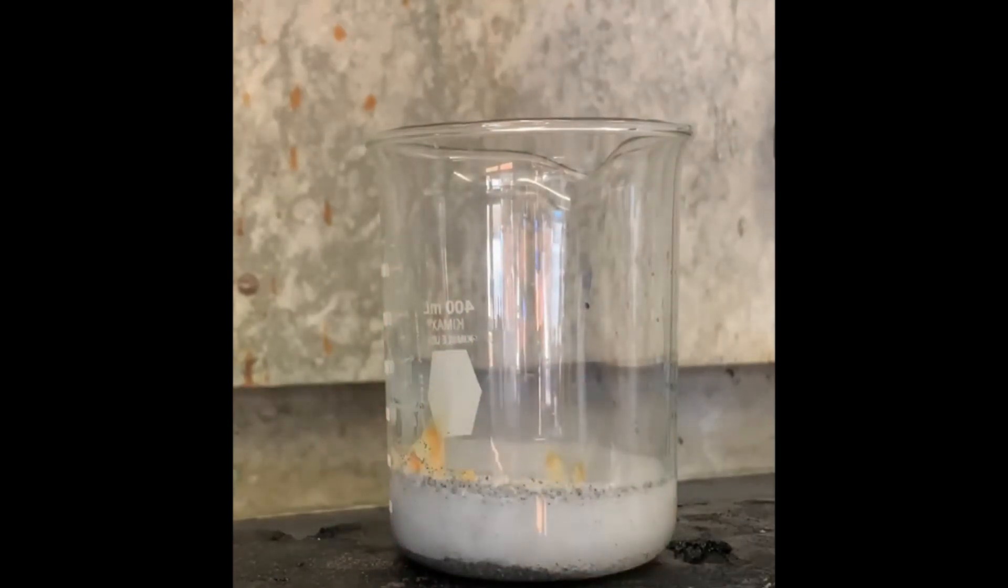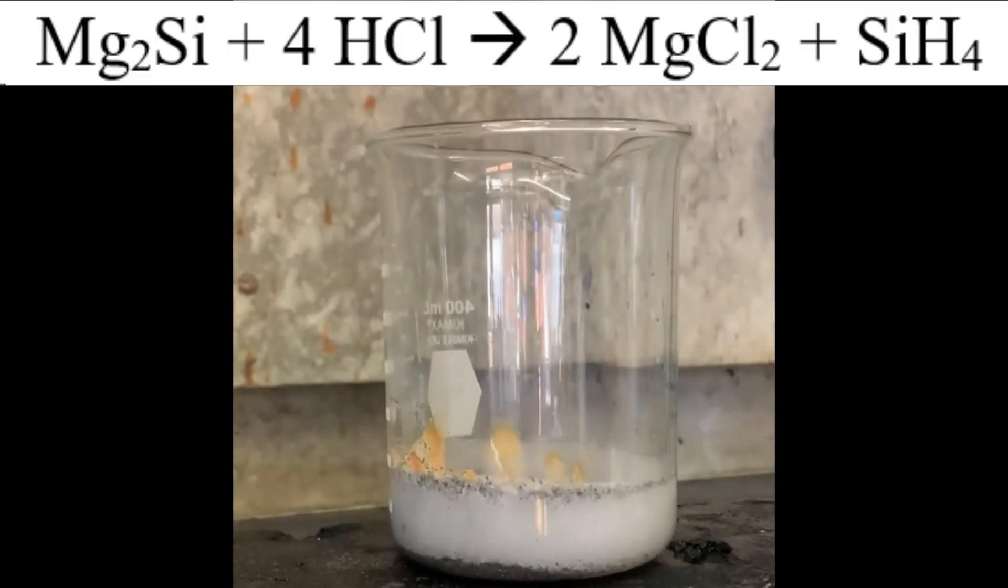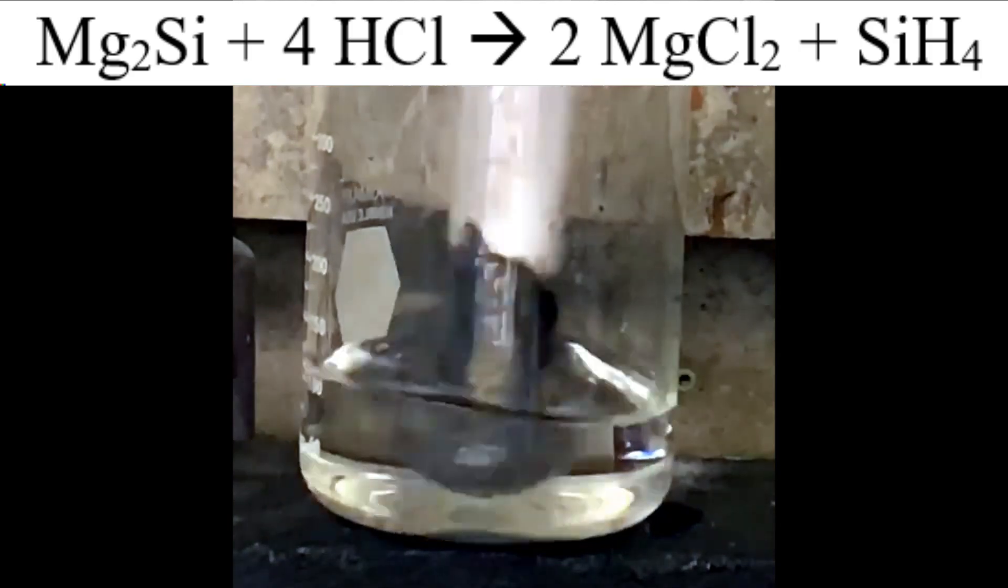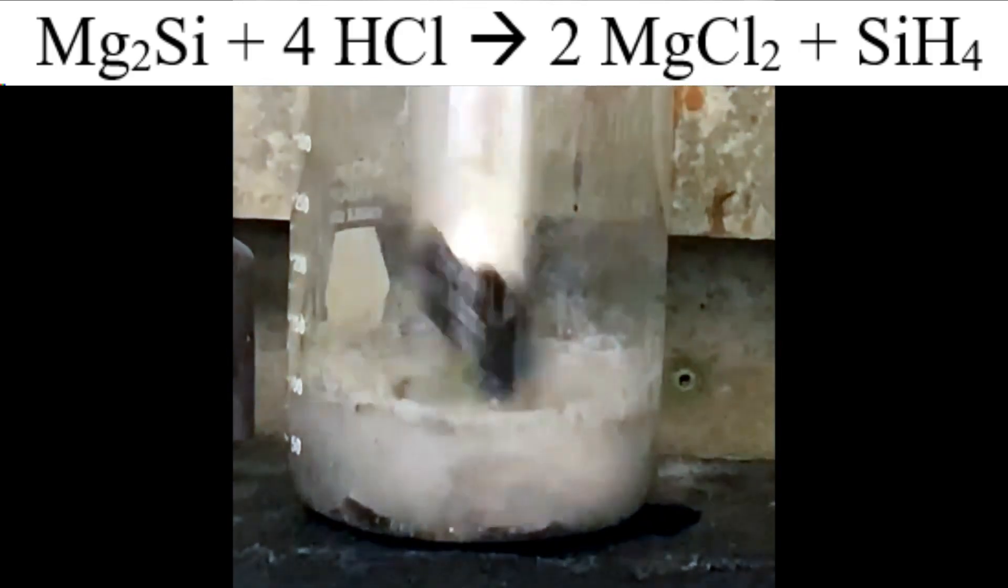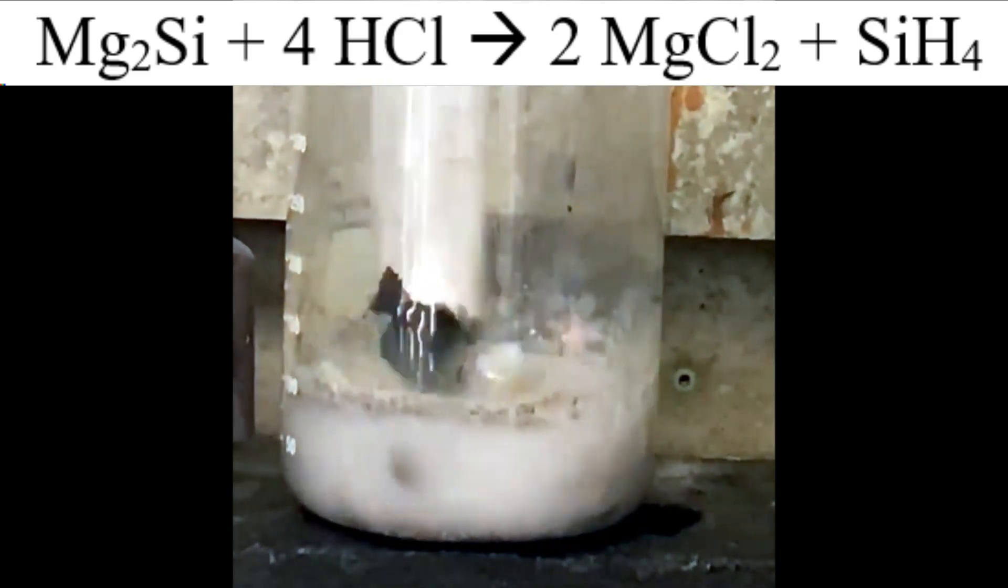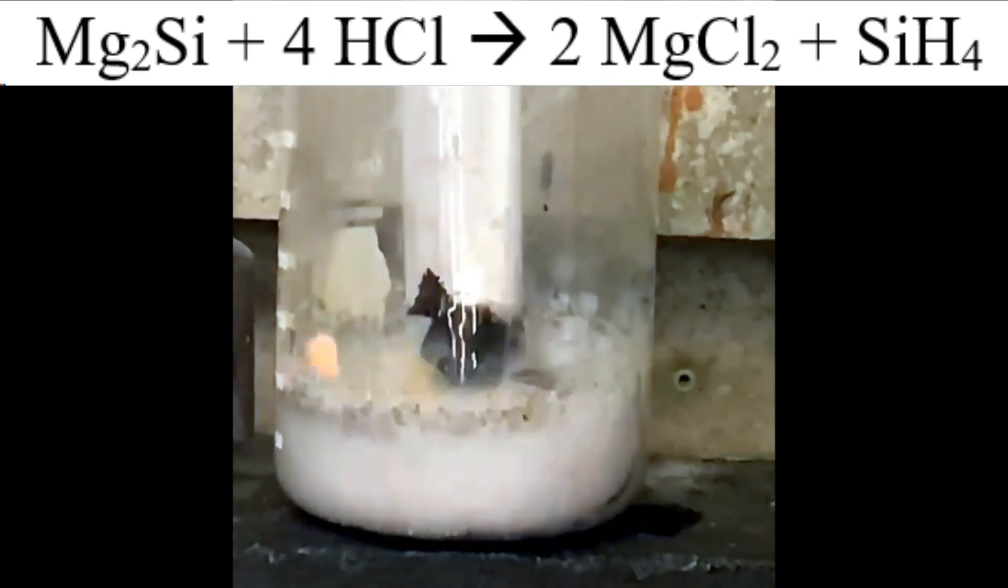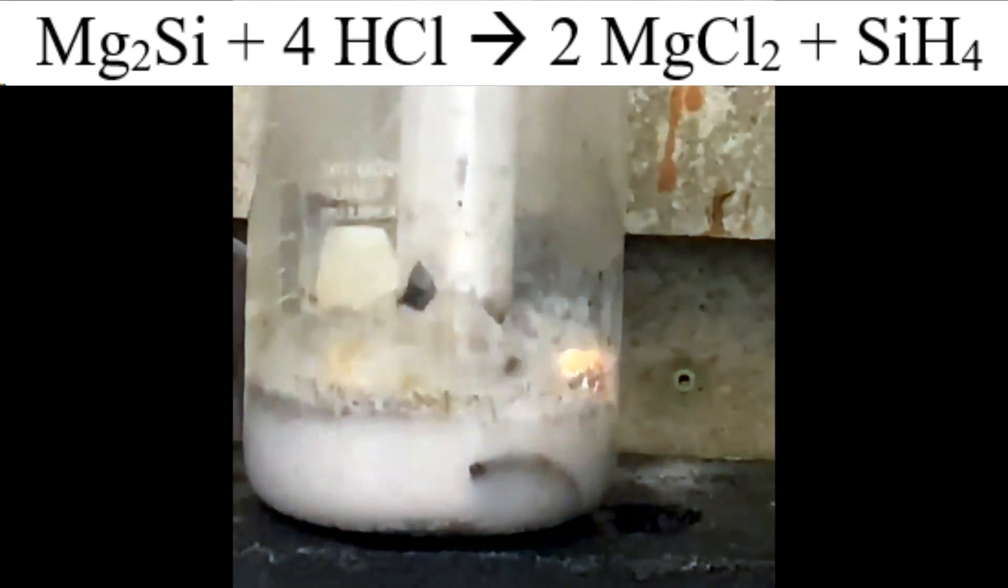What's going on here? Well, magnesium silicide reacts with the acid to form silane gas through the chemical reaction you see listed above. Silane gas, or SiH4, is the silicon-based analog to methane or natural gas. Just like methane, silane gas is flammable.